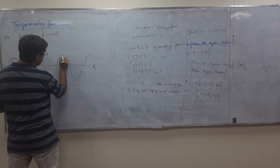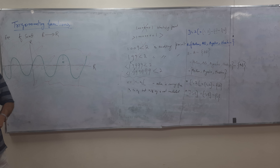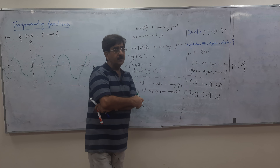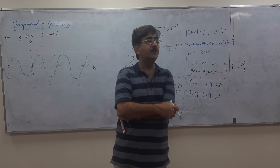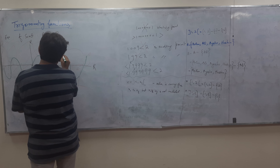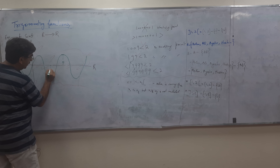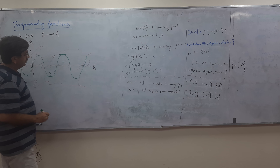Sin(0) is 0, and at pi/2, sin will be 1. So the maximum value is 1 and minimum value is minus 1. This will only be possible within this range.